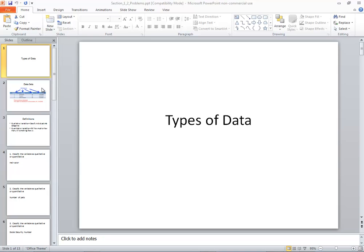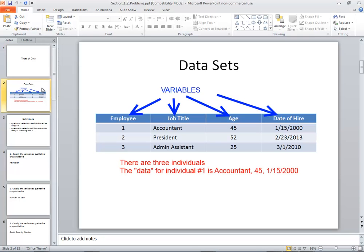Let's take a look at types of data. Let's first examine a data set. Here we've got an example: employee, job title, age, date of hire. And then we've got employee numbers go down there, job titles goes along with them, ages, and then date of hire.